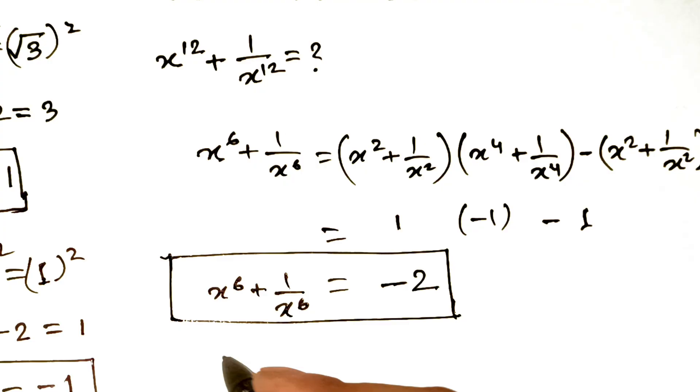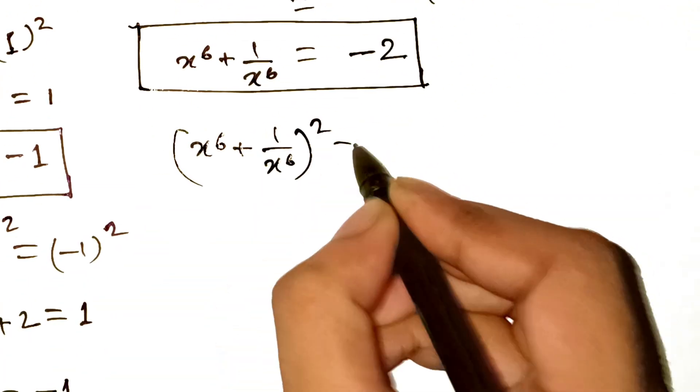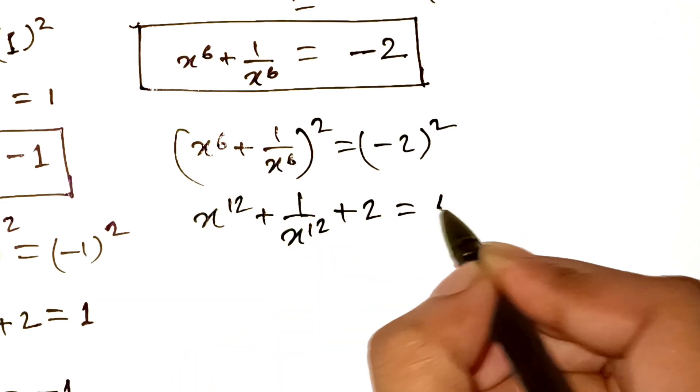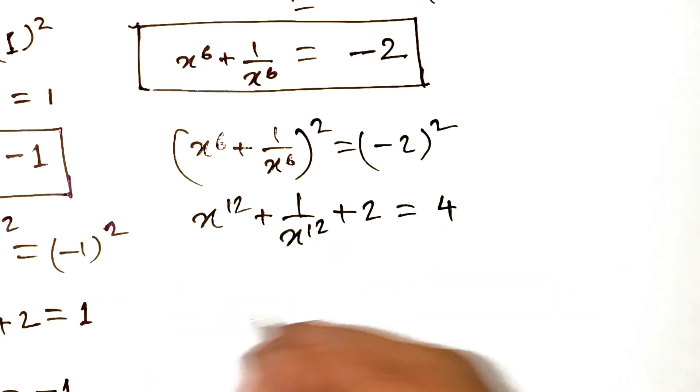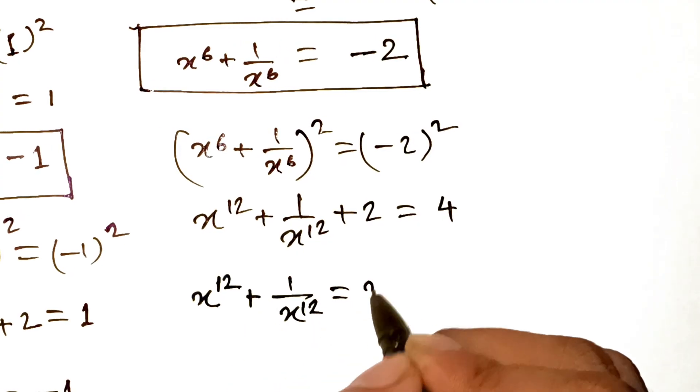Now the final punch. We take this minus 2 result and square it. That gives us x to the power 12 plus 1 over x to the power 12 plus 2 equals 4. Subtract 2 and there we have it. x to the power 12 plus 1 over x to the power 12 equals 2.